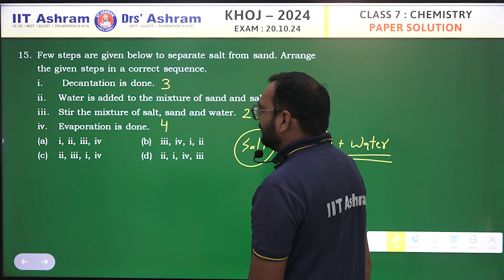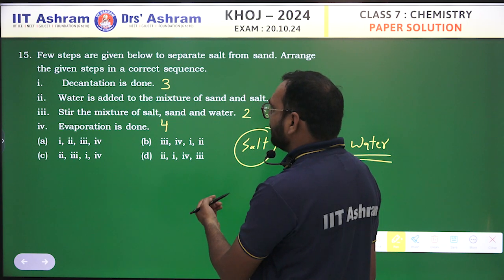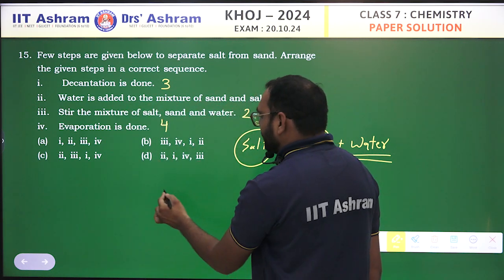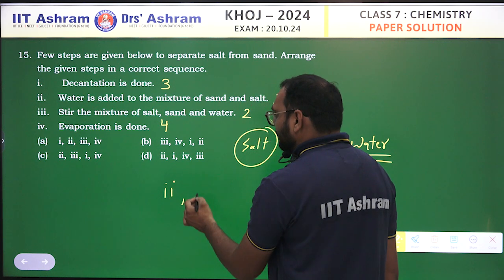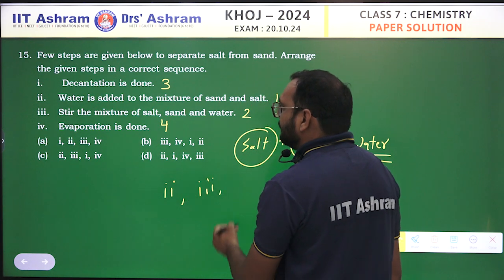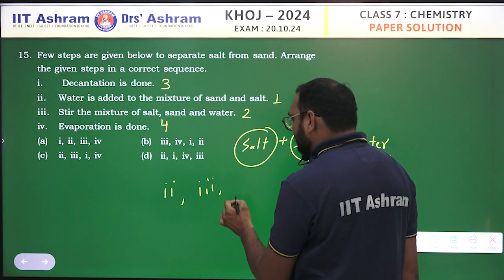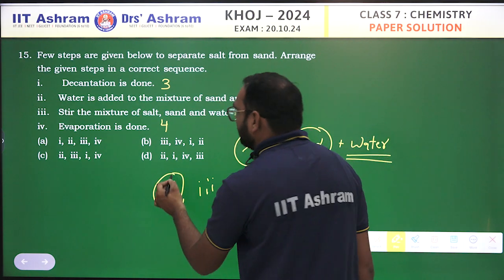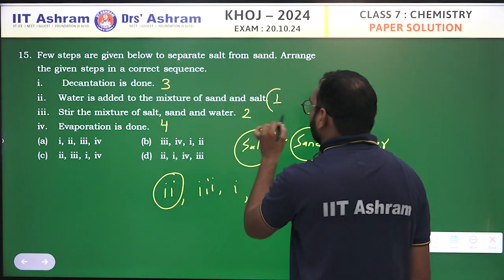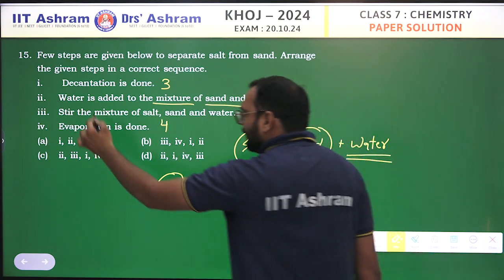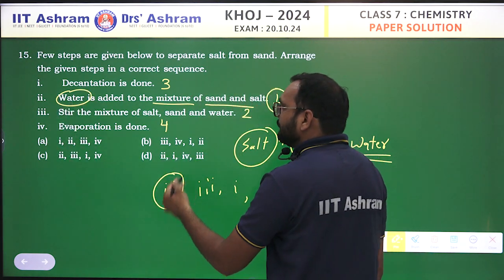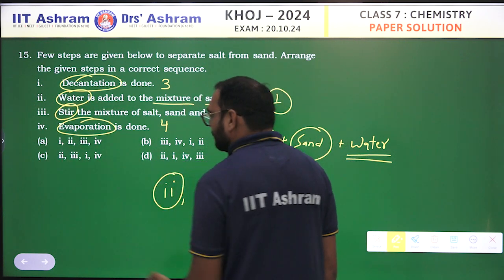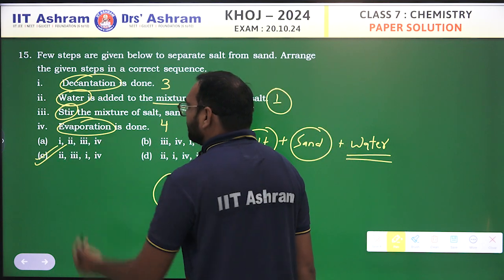So the correct order is: first, water is added to the mixture; second, stirring; third, decantation; fourth, evaporation. Option C is the correct answer.